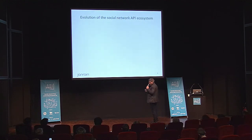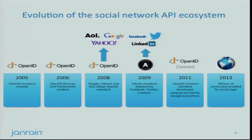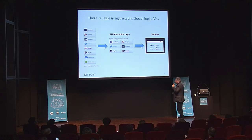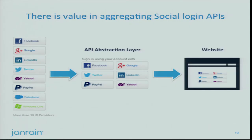Looking back at the history of this API ecosystem: everything started in 2005 with the creation of OpenID — libraries and frameworks were created, and Yahoo, Google, and AOL adopted it. Then OAuth came on board with LinkedIn, Twitter, and Yahoo. We are now with OpenID Connect. Not only do people want choice, but there is a tremendous amount of social networks and identity providers out there. There is value in aggregating different social login APIs into one single abstraction layer that brands can benefit from.